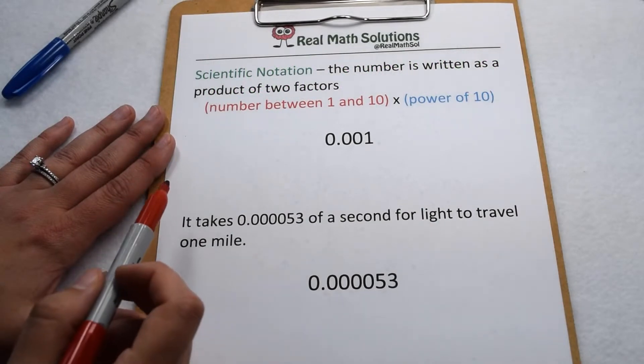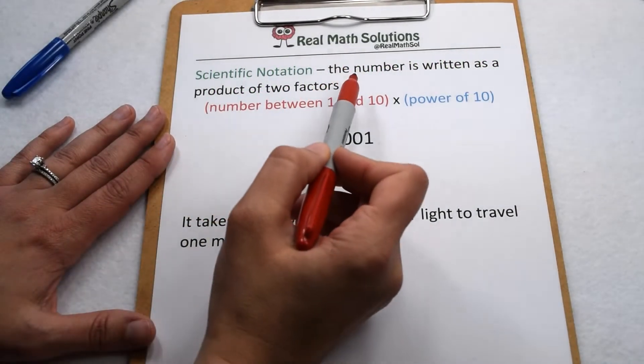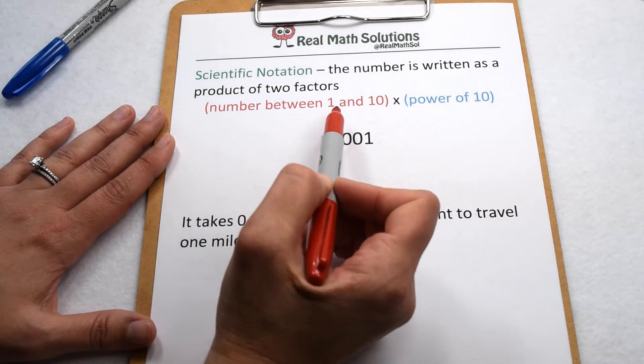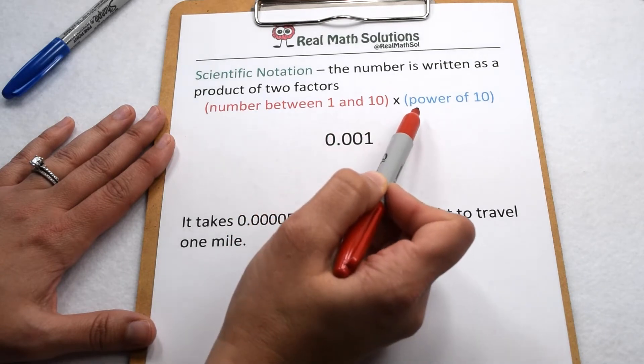Very small numbers can also be written in scientific notation. In scientific notation, the number is written as a product of two factors, a number between 1 and 10 and a power of 10.